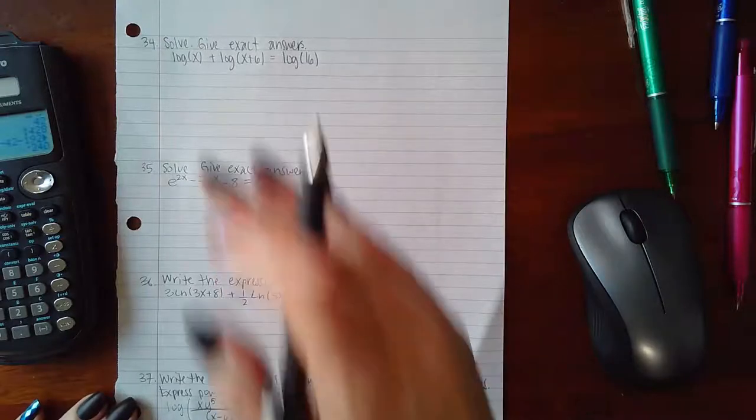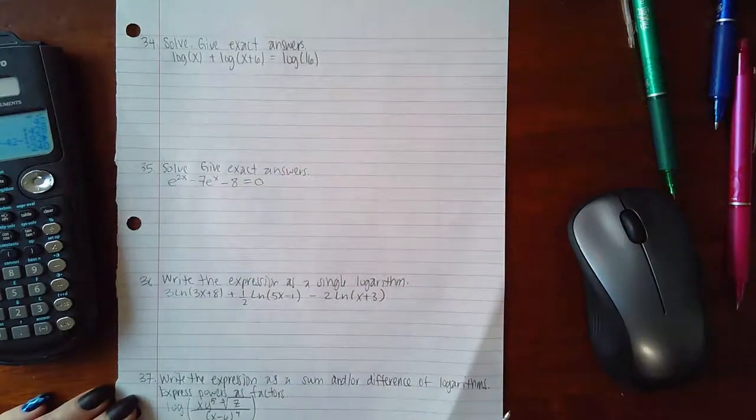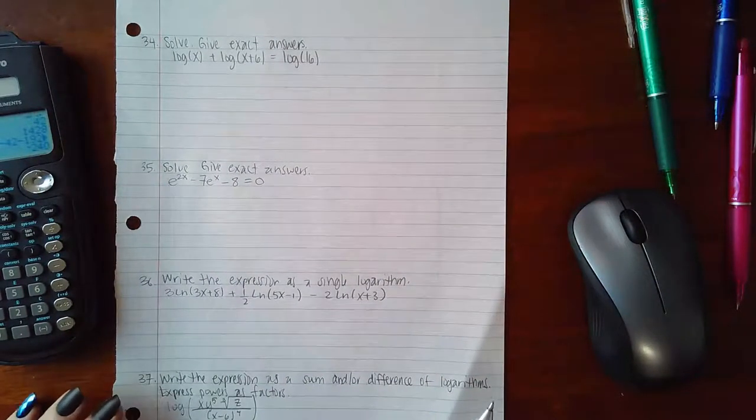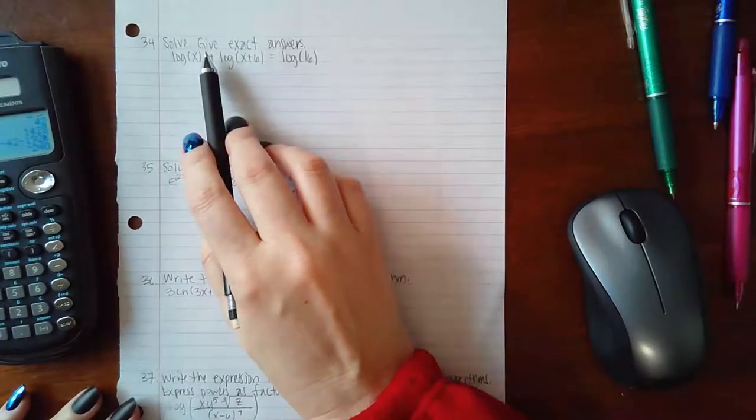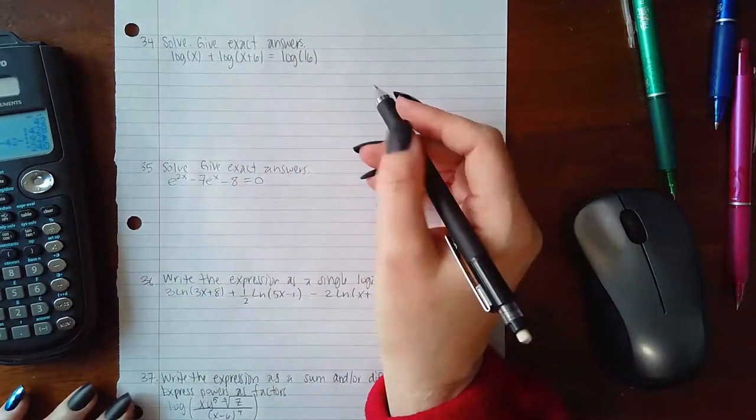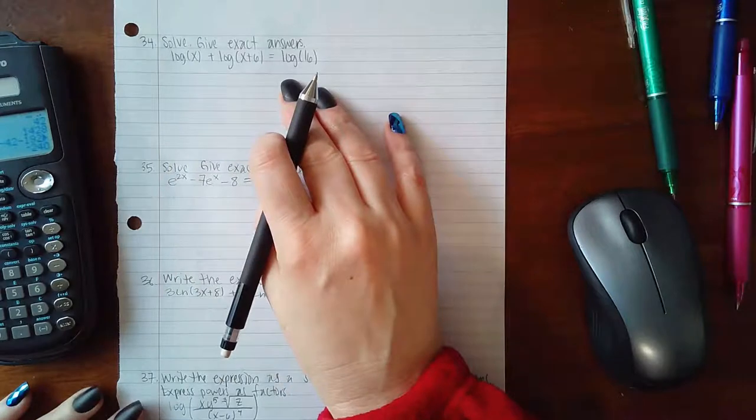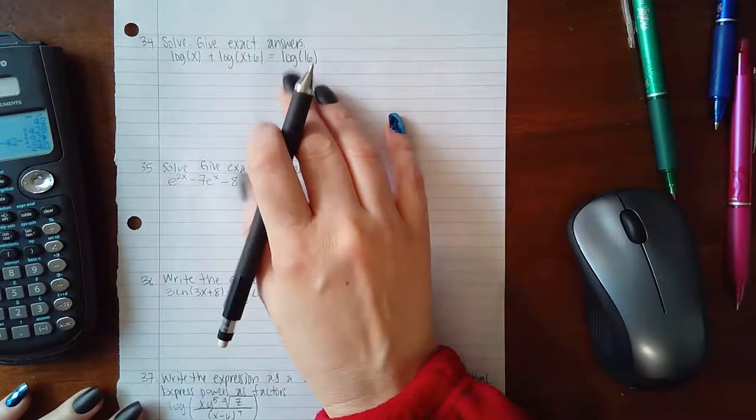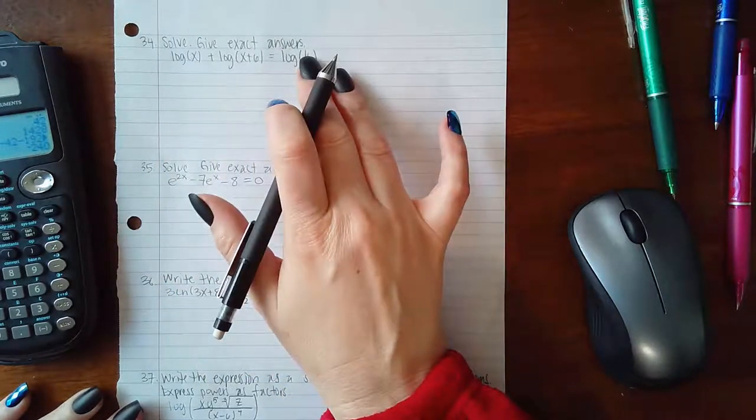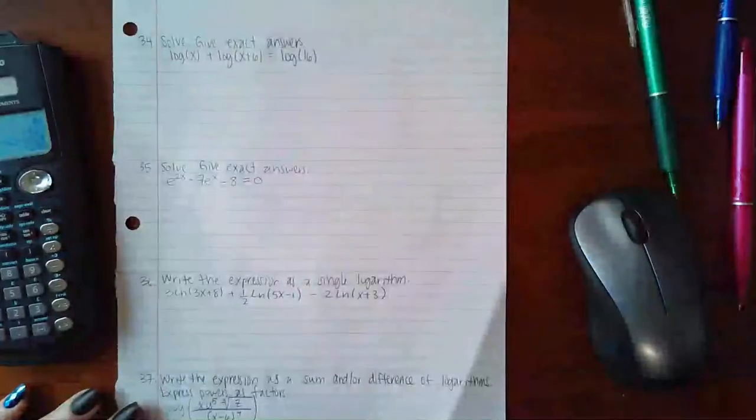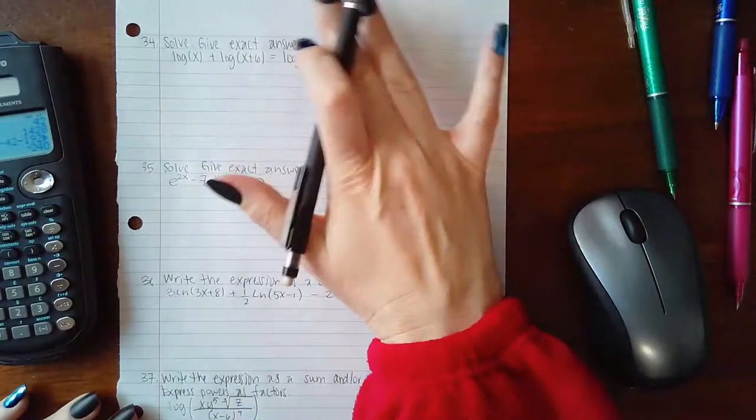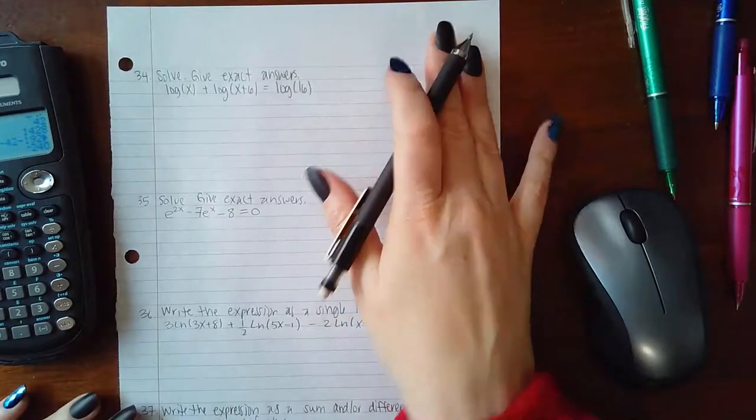This video will be for problems 34-37. We're going to solve and give exact answers. In order to solve a logarithmic equation like this, we notice we have logarithms on both sides, so we're going to compress them to one log on one side and one log on the other side.